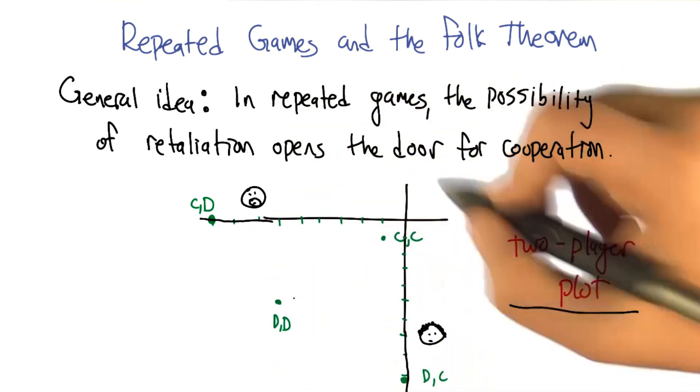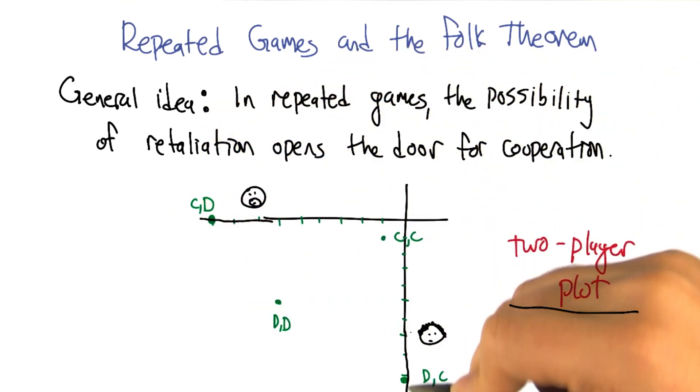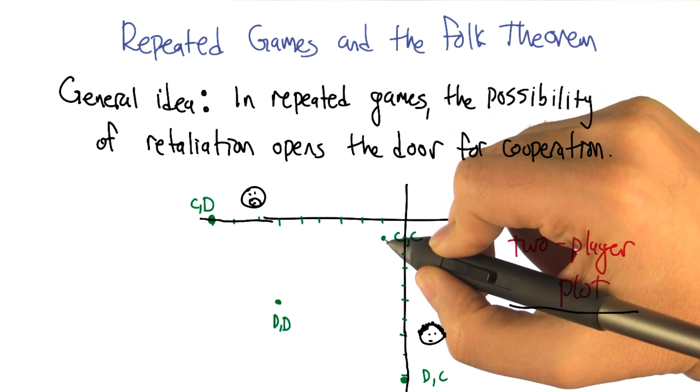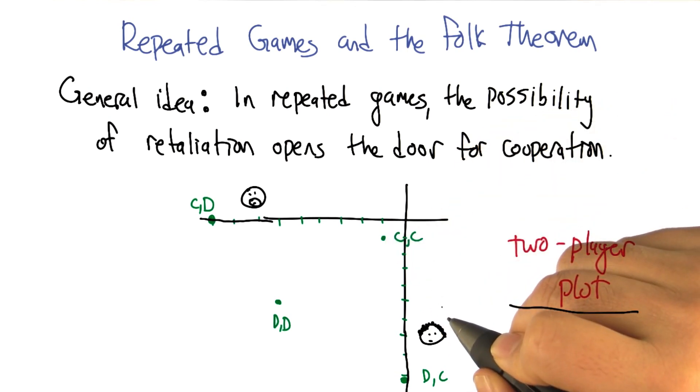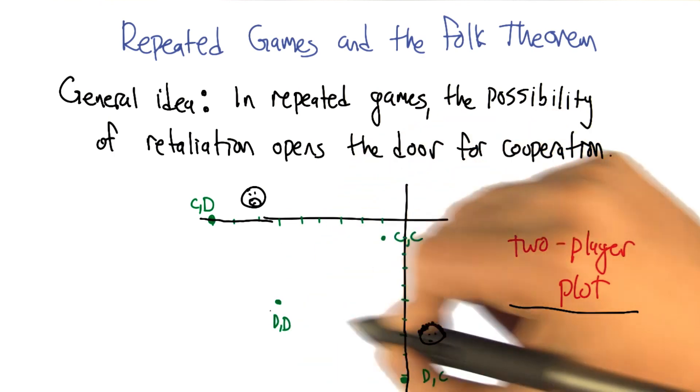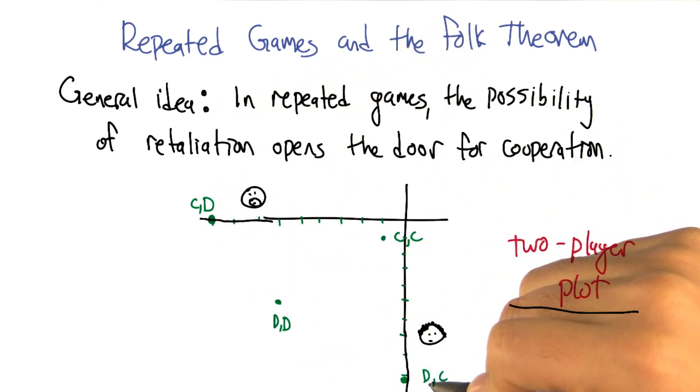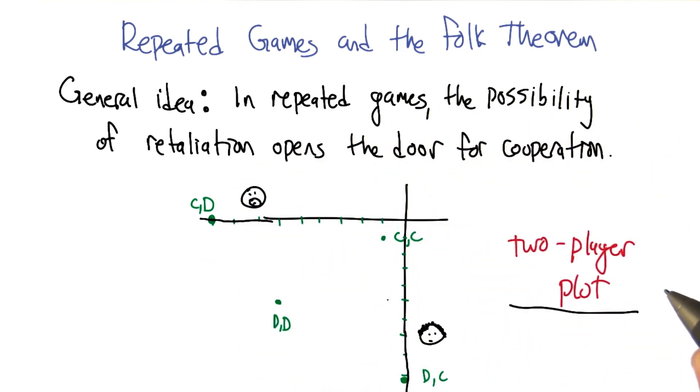This is the Smooth axis, and this is the Curly axis. So cooperate-cooperate, remember from the Prisoner's Dilemma payoffs, is (-1, -1). So I put a dot at (-1, -1). Defect-defect is at (-6, -6). Cooperate-defect is at (-9, 0), and defect-cooperate is at (0, -9). So do those four points make sense to you? Do you understand the idea?